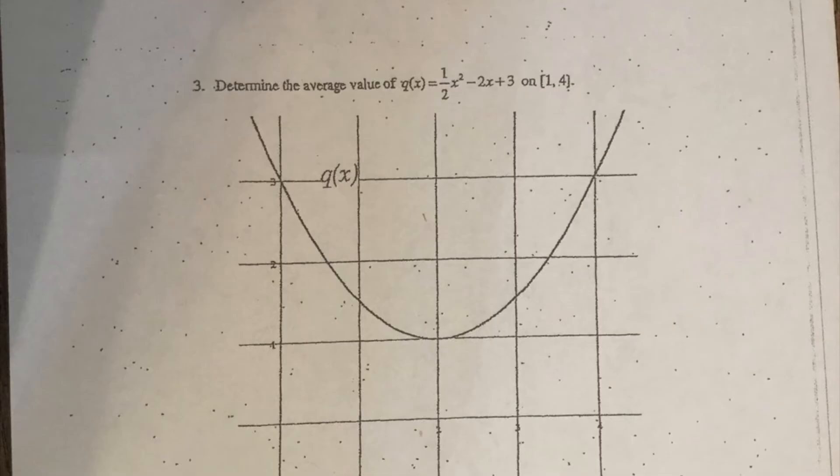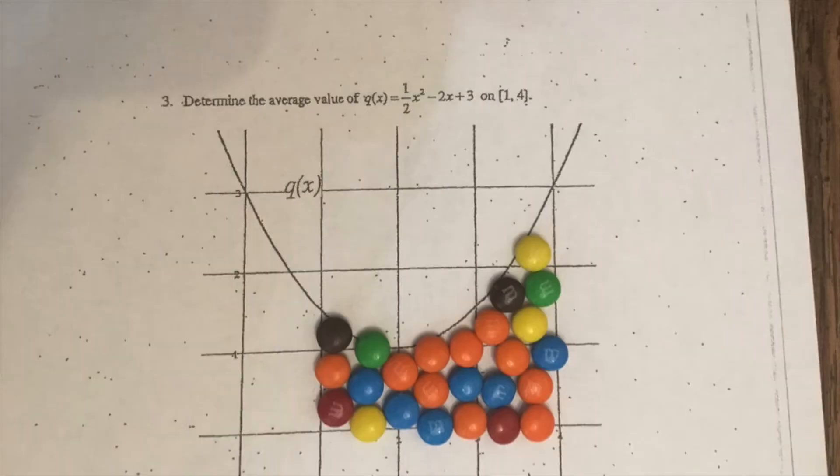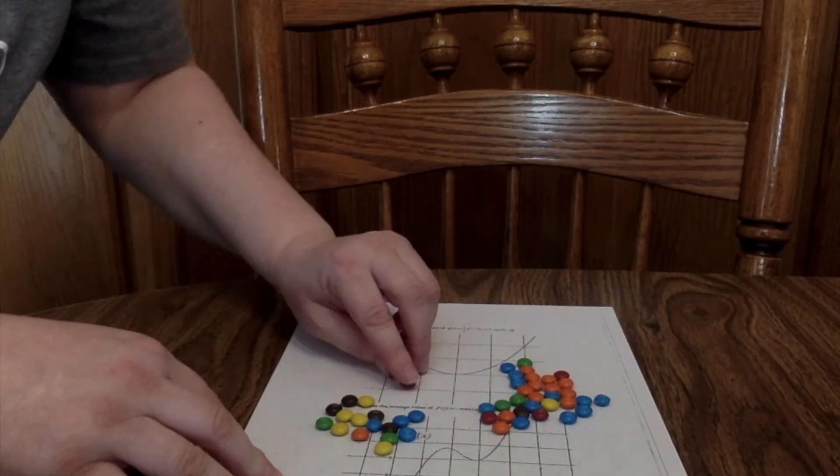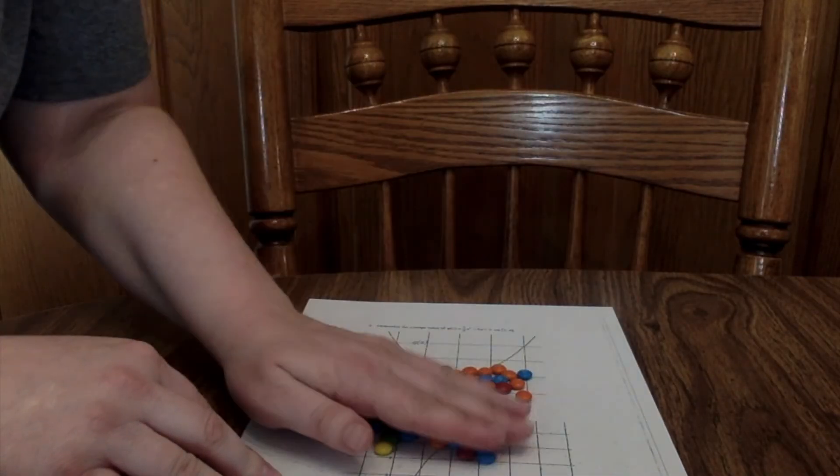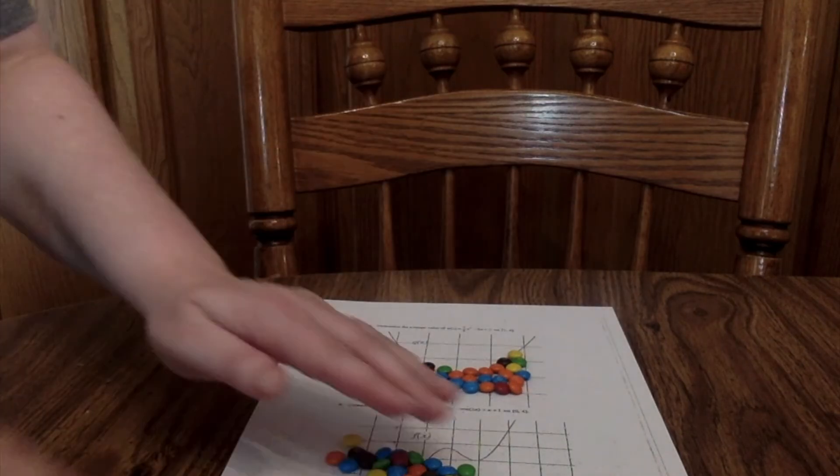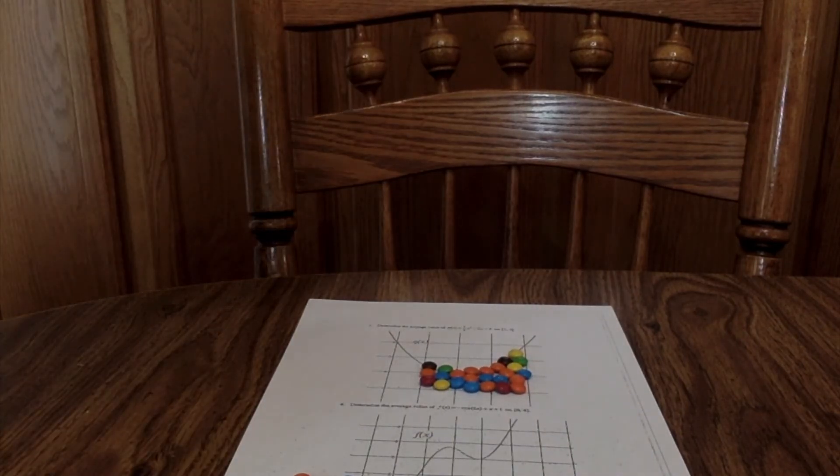Now I have two more examples, and we're going to do the same thing. We're going to put the M&Ms under the curve, and then we're going to take that number of M&Ms and spread them out equally so we can get the average. What we're finding is the average function value, which in this case means we're finding the average y value each time.